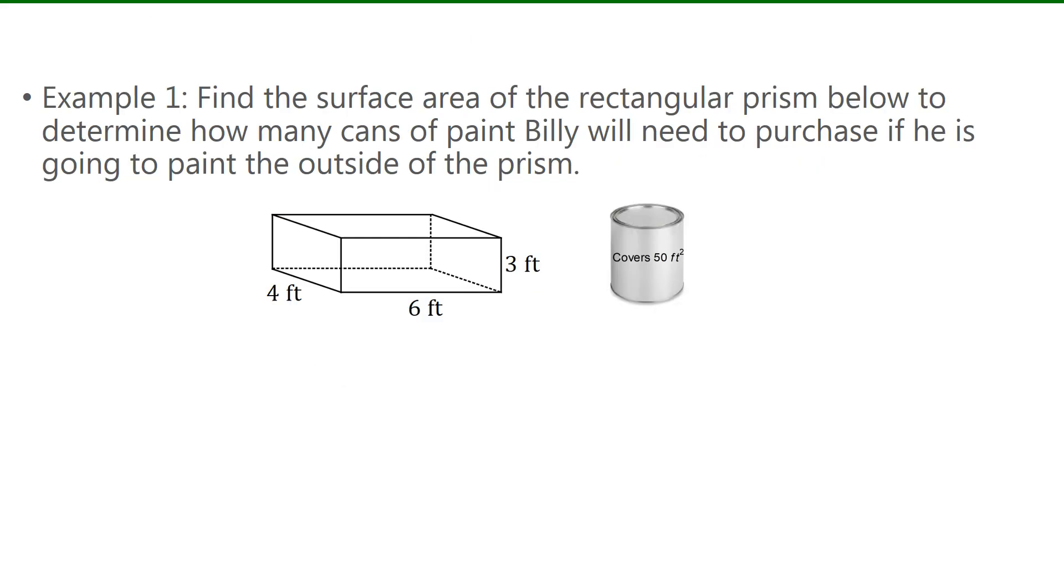So we'll use these notes that we just made to help us with example one. We're asked to find the surface area of the rectangular prism below to determine how many cans of paint that Billy will need to purchase if he is going to paint the outside of the prism. Now we see that one can of paint covers 50 square feet. So let's start by finding the surface area of the prism.